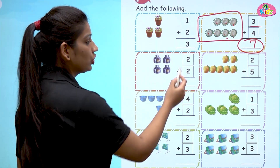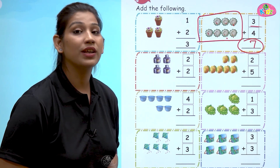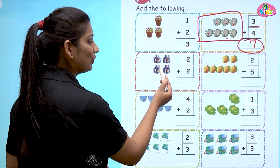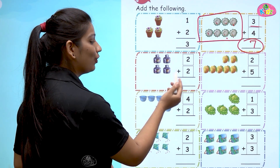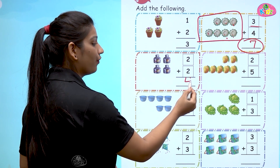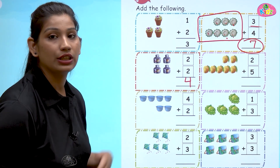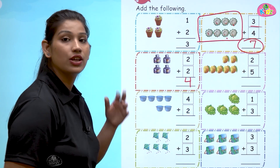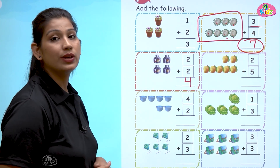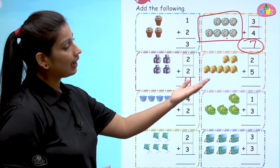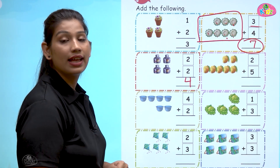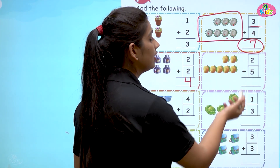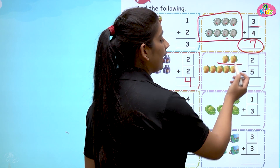Here we got two plus two. Two plus two — one, two, three, four — two plus two is four. You can easily count the objects and tell the number of things. Two plus two is four.